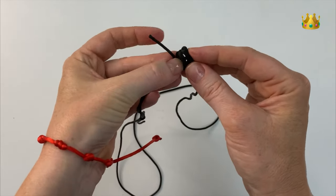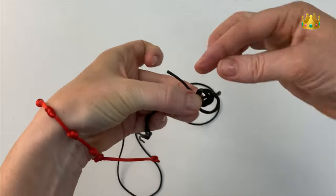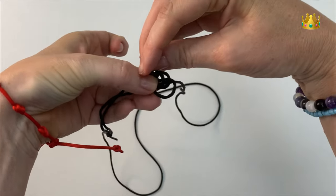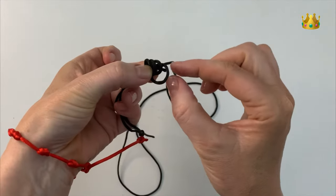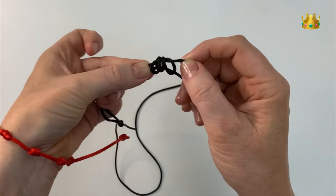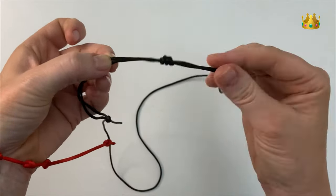Holding on to those loops and then gently bringing this tail end around and poking it down all three loops. Pulling it out the right hand side and then pulling your knot down nice and tight and tidy.